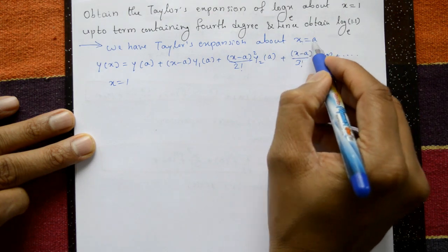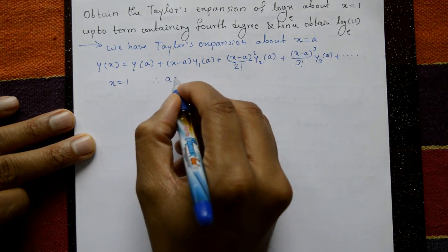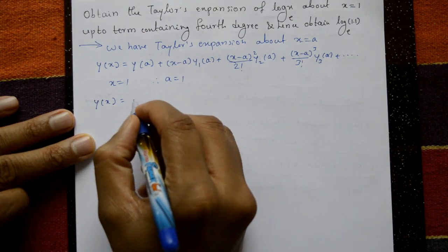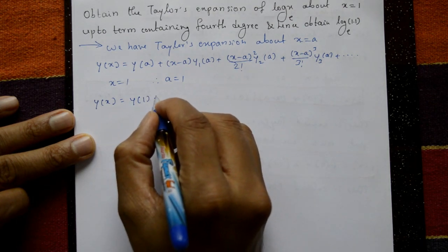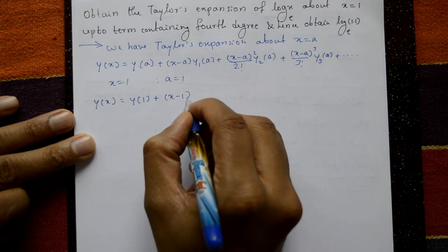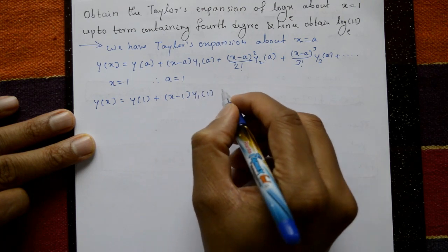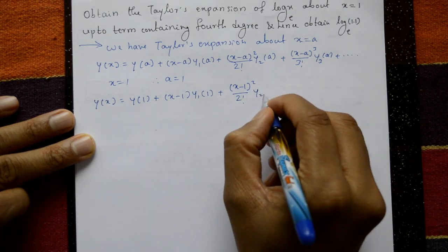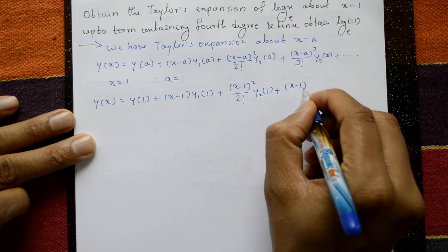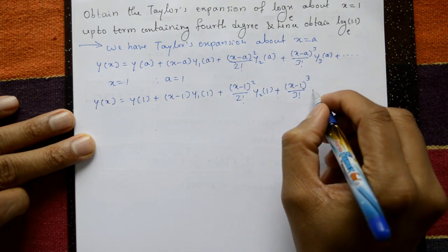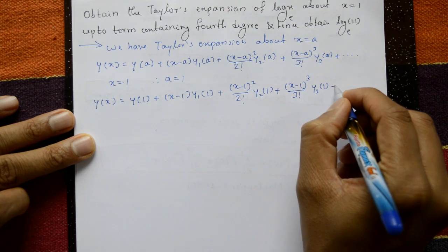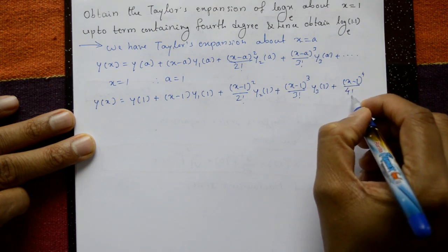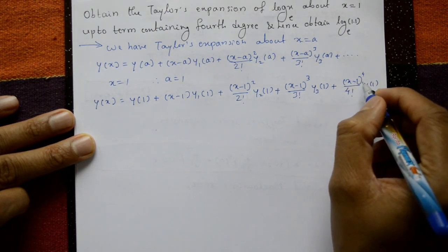Given the expansion is about x = 1, so x = a means a = 1. The equation becomes y(x) = y(1) + (x−1)y₁(1) + (x−1)²/2! · y₂(1) + (x−1)³/3! · y₃(1) + (x−1)⁴/4! · y₄(1), up to the 4th degree.